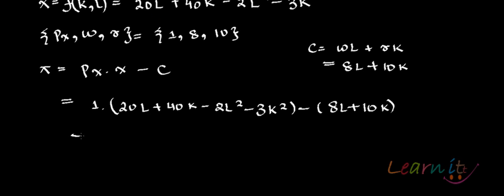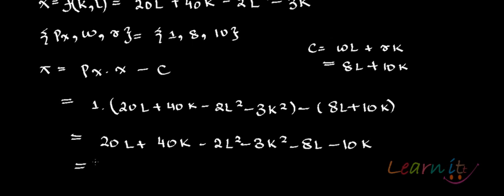What you have is basically 20L plus 40K minus 2L squared minus 3K squared minus 8L minus 10K. So what you have is basically minus 2L squared plus 12L minus 3K squared plus 30K. This is the profit function which you have.